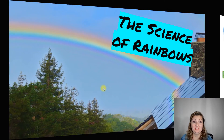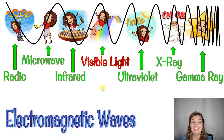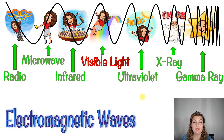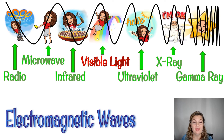First up, what is a rainbow? It comes from the electromagnetic spectrum — specifically the part that humans can see. We call it visible light, and it sits right here in the middle of the spectrum. And this is going to be the rainbow.